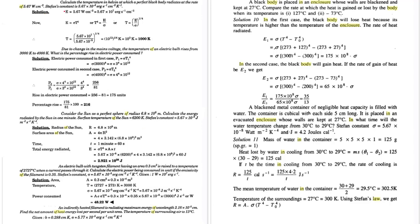We have another question: calculate the temperature in Kelvin at which a perfect blackbody radiates at a rate of 5.67 watts per centimeter squared. This is power per area, so calculate the temperature in Kelvin.